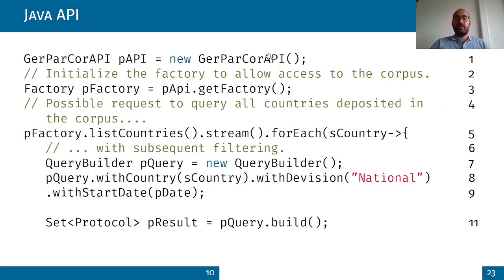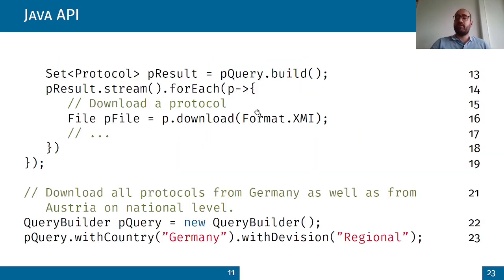This is a small example of how easy it is to use our Java API. First we initialize the GAEPA Core API. After that we get the factory, filter all countries, and sub-filter only to the national level. Then we build the query to get every protocol in this query, and download them — in this example in the XMI format.